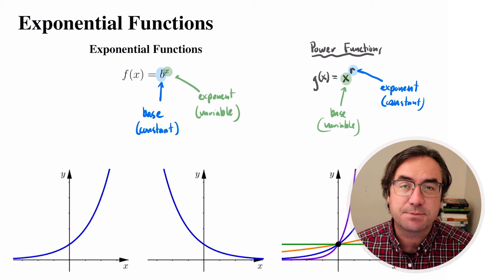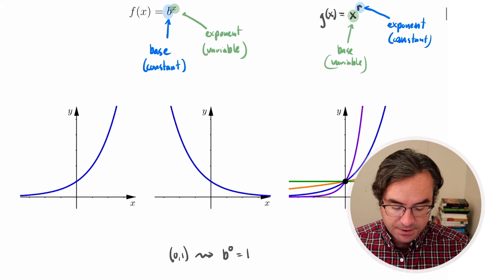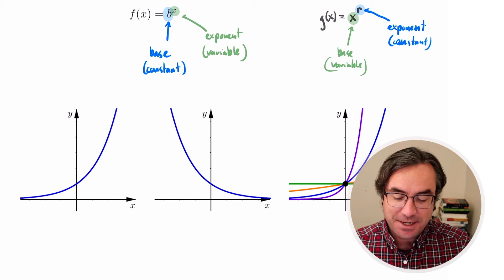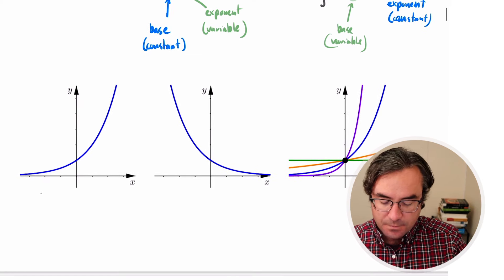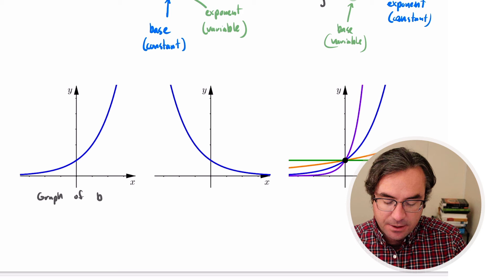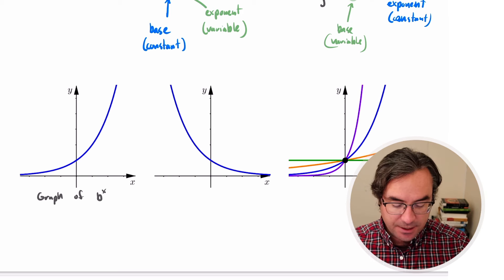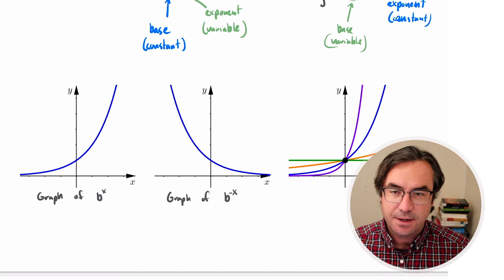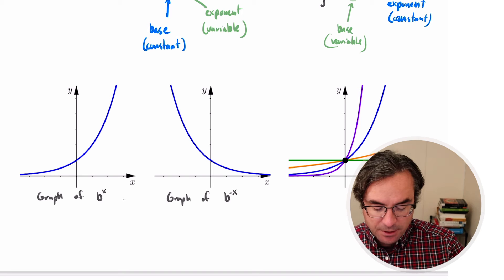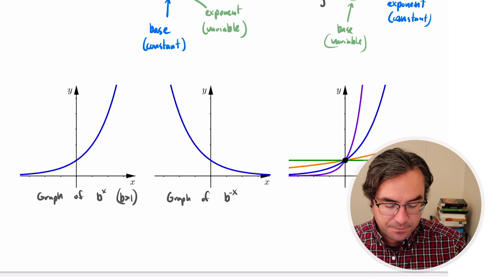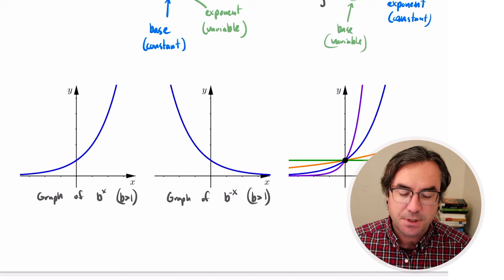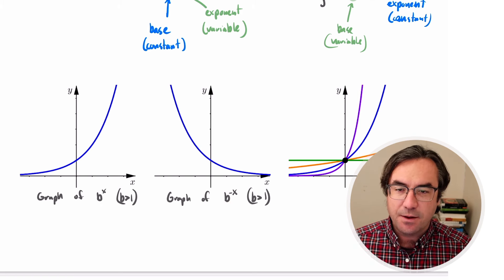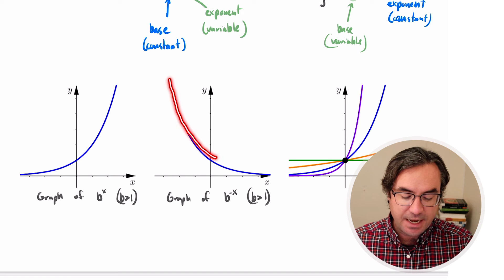It's going to be helpful to know what exponential functions look like. The two most common shapes: the first is the graph of b raised to the power x, and the second is the graph of b raised to the negative x. For these graphs, we're primarily looking at base terms that are bigger than 1. We sometimes call b^x an exponential growth curve, and b^(-x) an exponential decay curve.